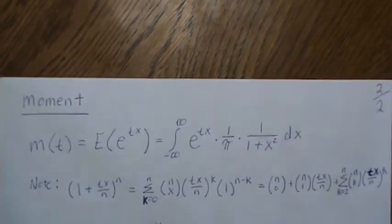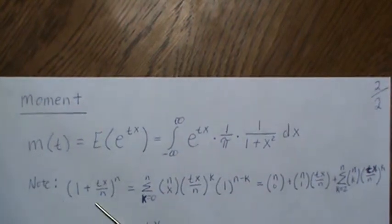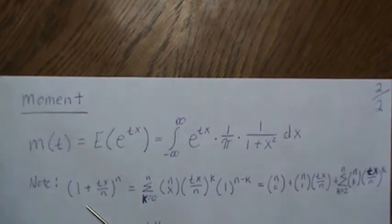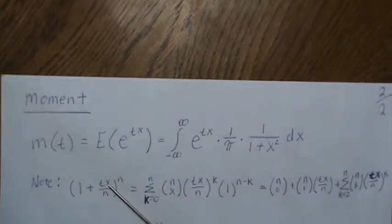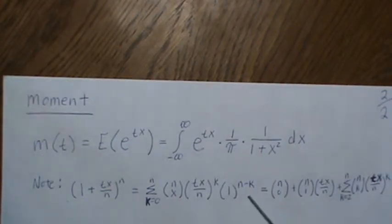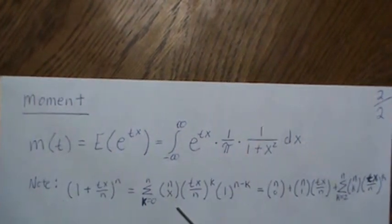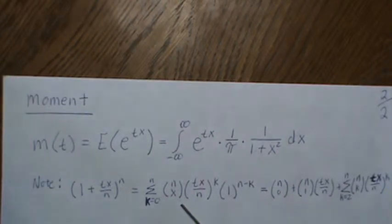If we have (1+tx/n)^n and take the binomial expansion, this is for x positive and t positive. We get the binomial expansion of this. Now if we take the first two terms...